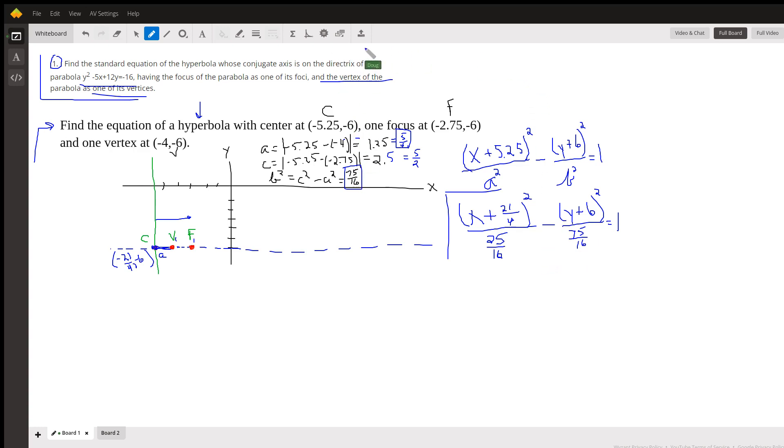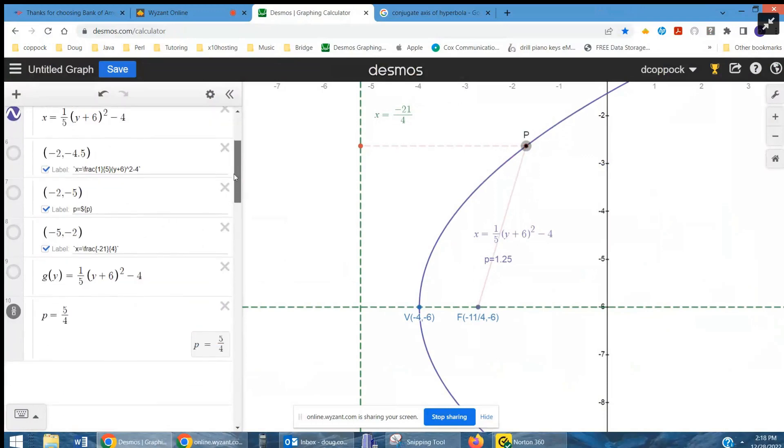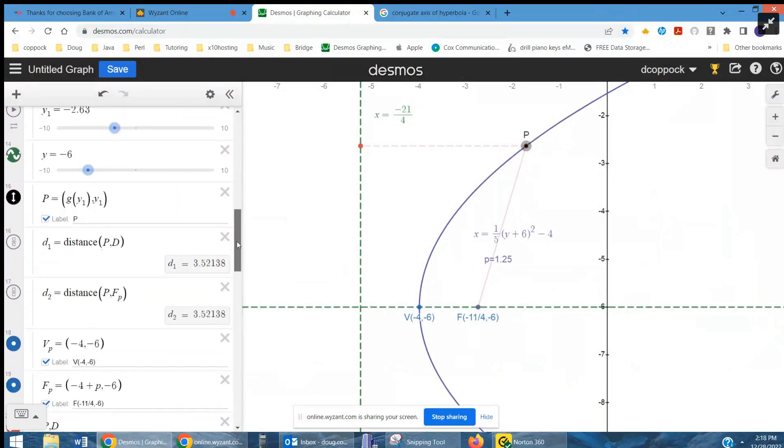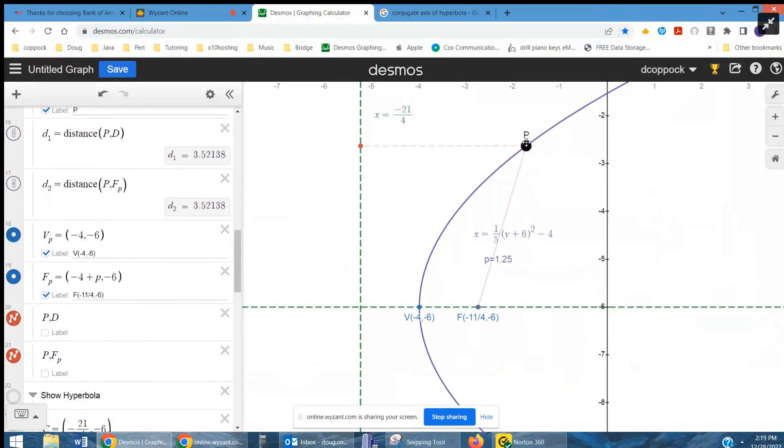So if I share my screen real quickly and go to Desmos, there's the parabola. And by the way, if I slide this point along the parabola, the distance from that point to the directrix is always the same as the distance from that point to the focus. And there that is, right there, D sub 1, D sub 2. It's always the same.